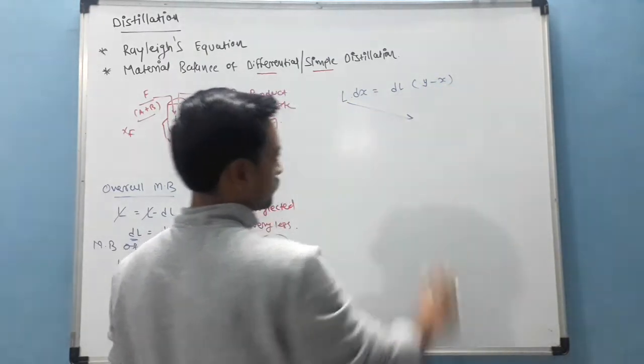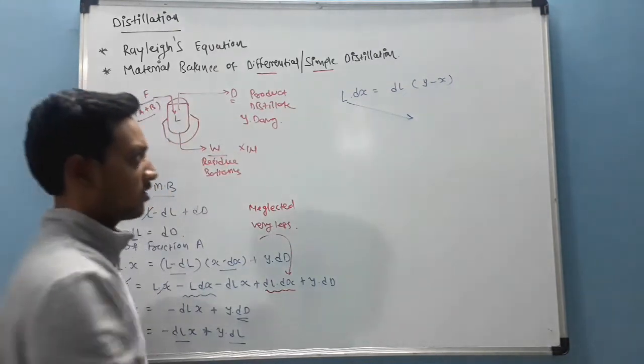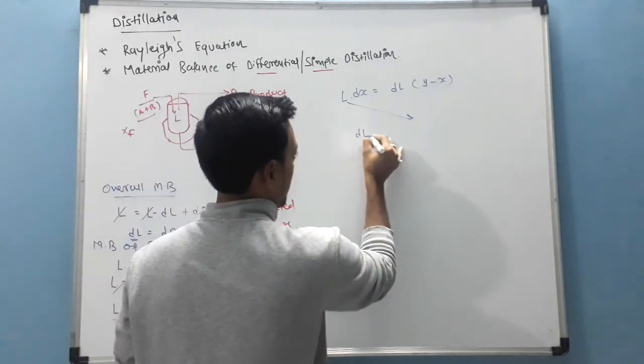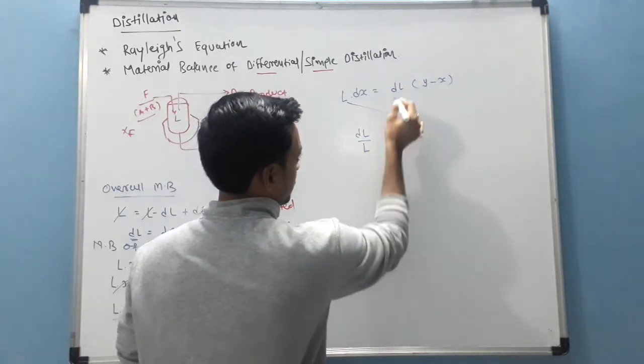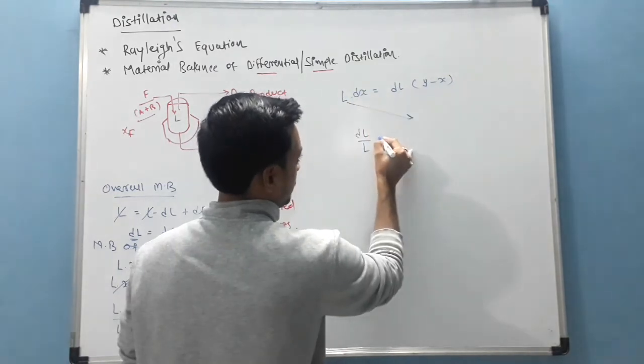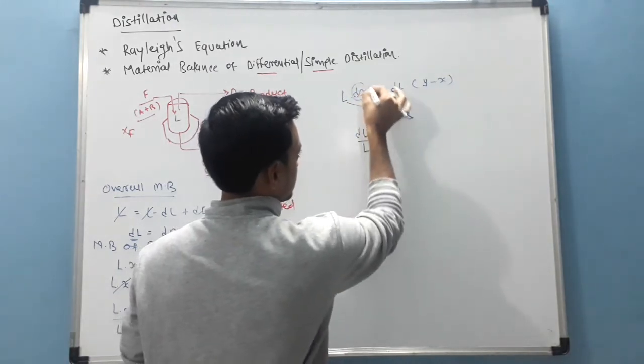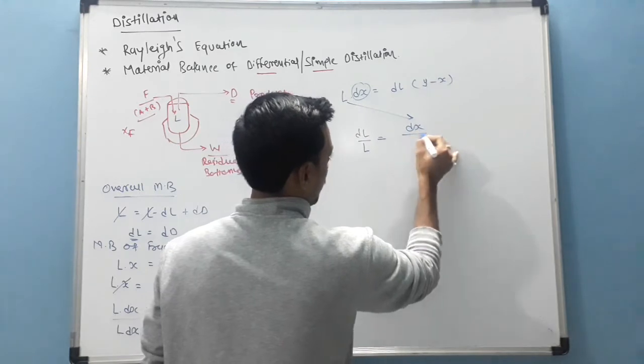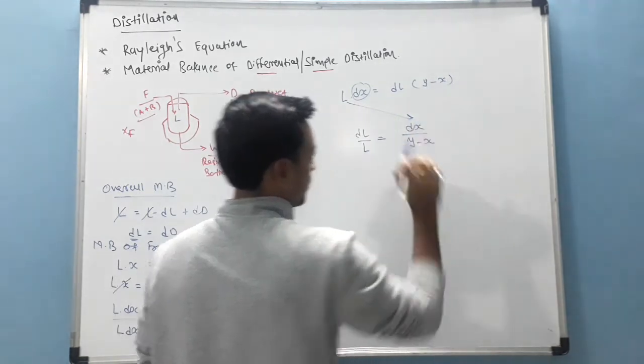L goes to the denominator of DL. So DL by L. DL by L is equal to DX as it is, DX upon Y minus X.